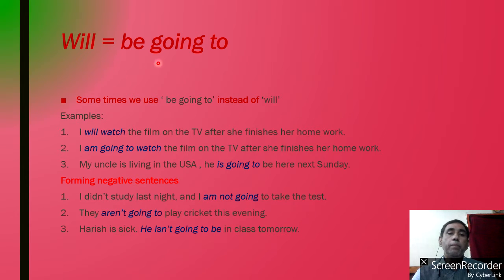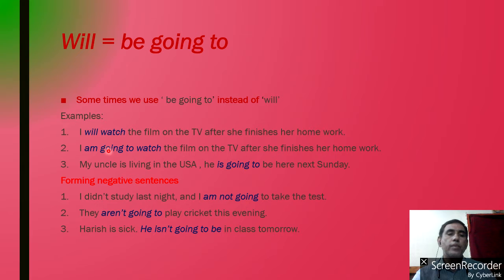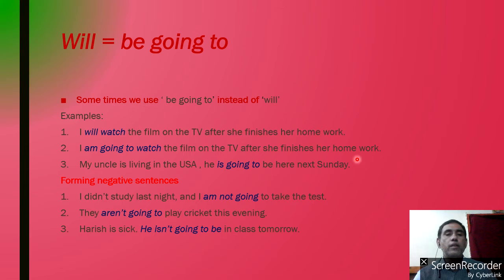Will is equal to 'be going to'. Usually in spoken English, people use 'be going to' instead of 'will'. Here 'be' means be-forms. For example: 'I will watch the film on the TV after she finishes her homework.' We can also say the same sentence as: 'I am going to watch the film on the TV after she finishes her work.' In these two ways, we can express near future actions.